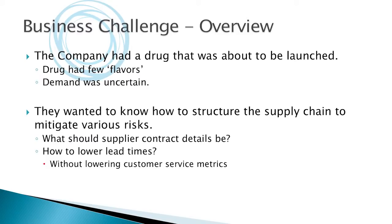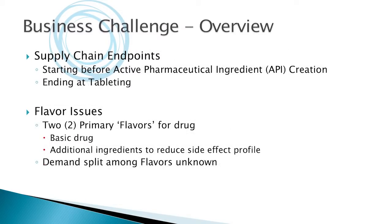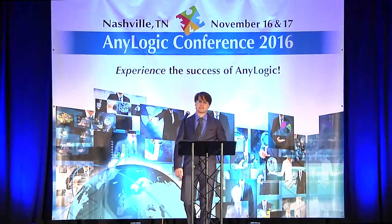This company had a drug that was about to be launched — they were ramping up for it, already past trials. This drug had only a very few different flavors or ways to manufacture it, and they had no idea how much demand they'd have. How do you build a supply chain when you don't have demand data? They wanted to know how to structure the supply chain to mitigate risks and particularly how to lower their lead time.